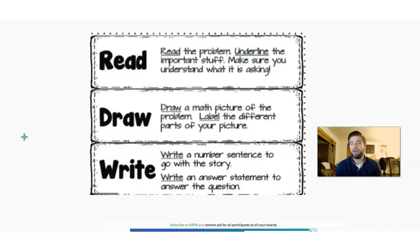And finally, we're going to write a number sentence to go with the story. And we're going to write an answer to the question. And we're going to make sure we label our answer with words. So let's get to it. Let's start with a one step word problem before we go to two step word problems. Let's try out our RDW strategy now.